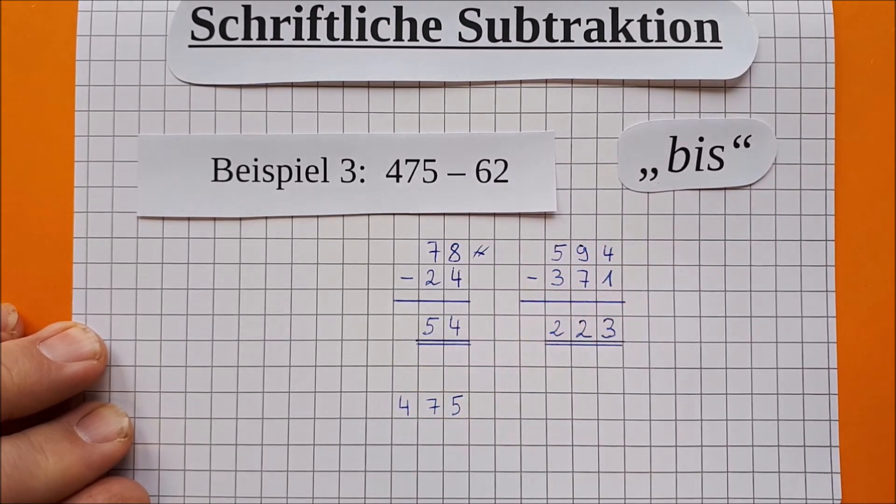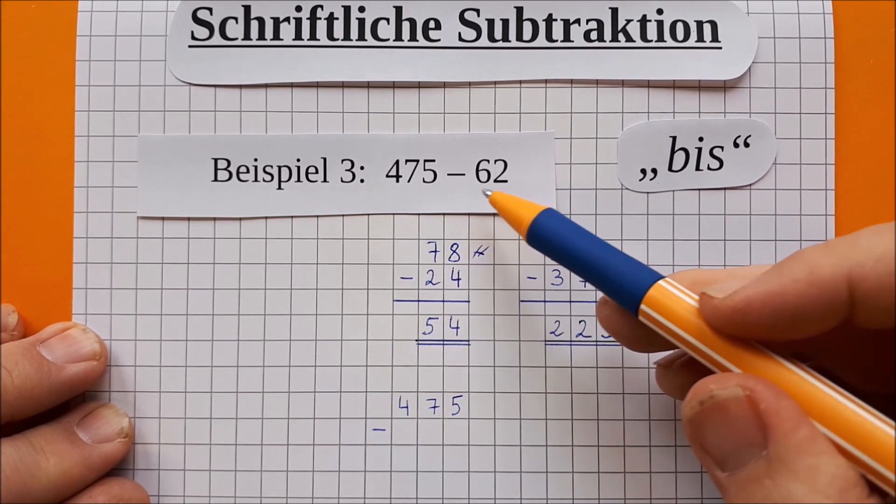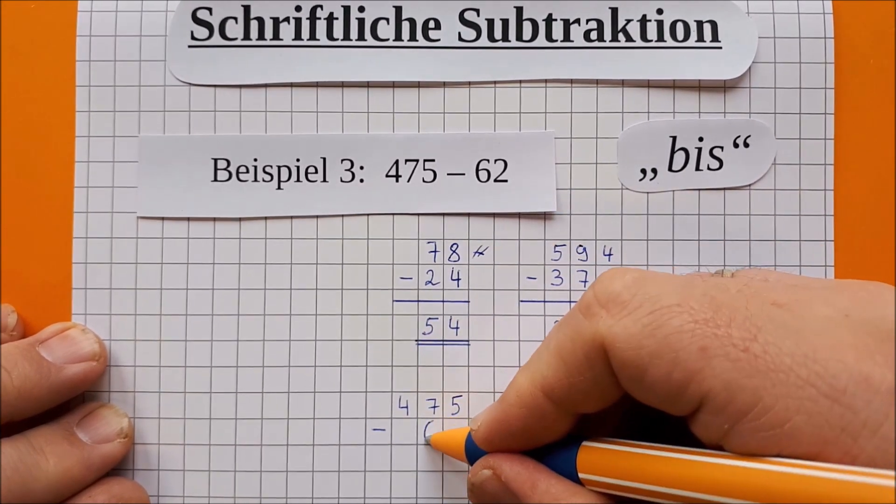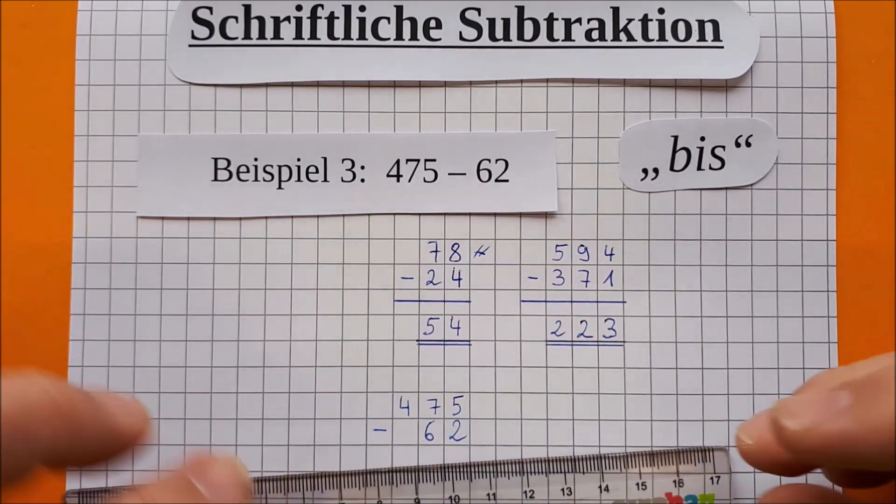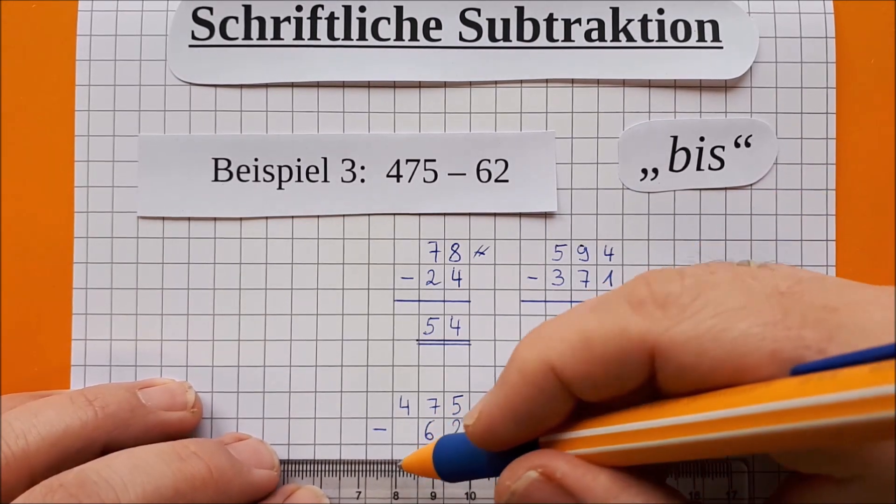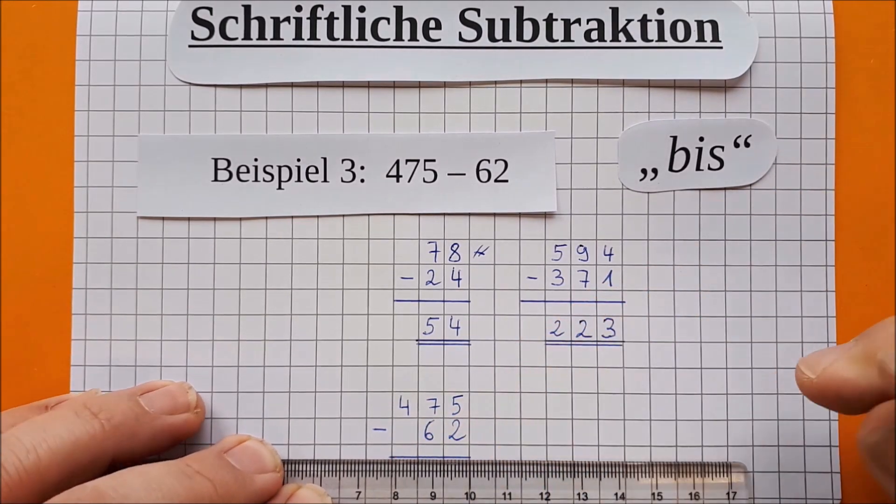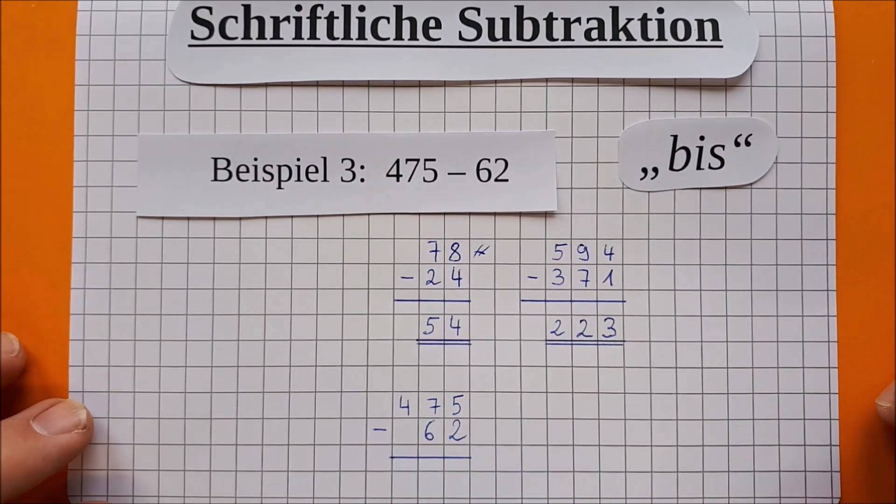Und 75, ja, kann man lesen. Minus. Und jetzt müssen wir aufpassen. Das ist nur eine 62. Das heißt, die 6 kommt natürlich unter die 7, weil es beides die 10er sind und die 1er untereinander. Der Strich wird wieder in die Mitte der Kästchenreihe gezogen. Und ich rutsche das nochmal ein bisschen hoch.